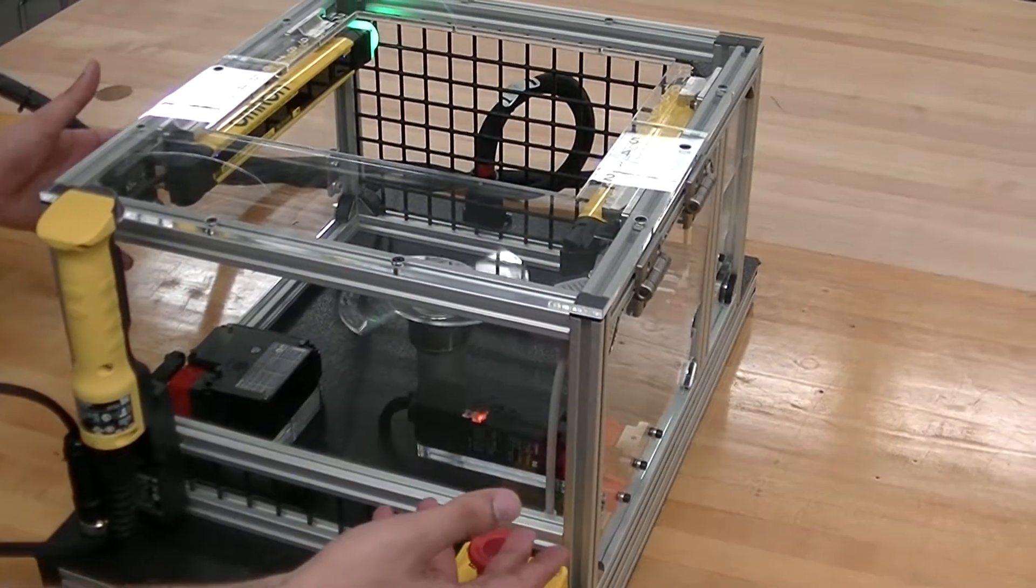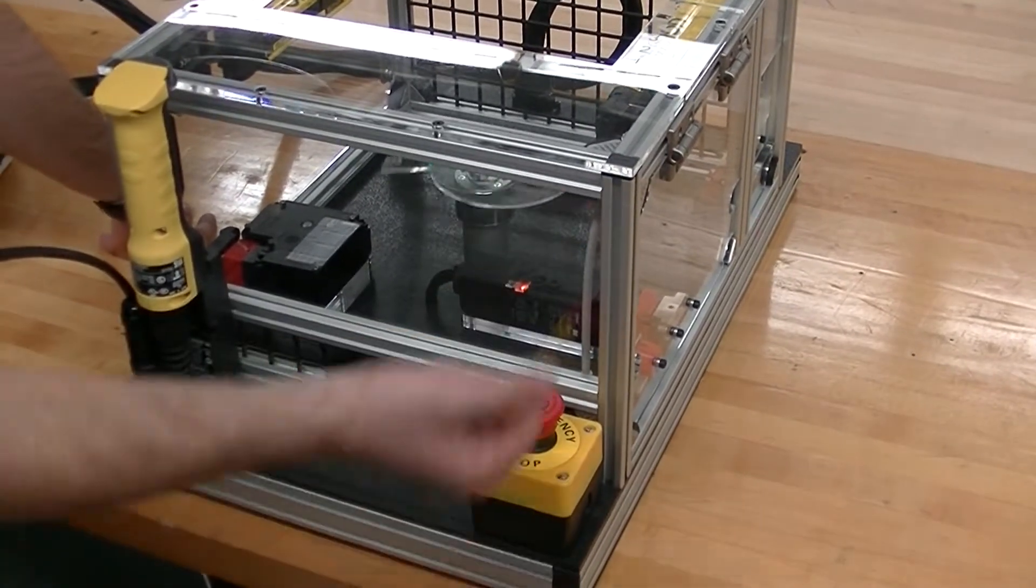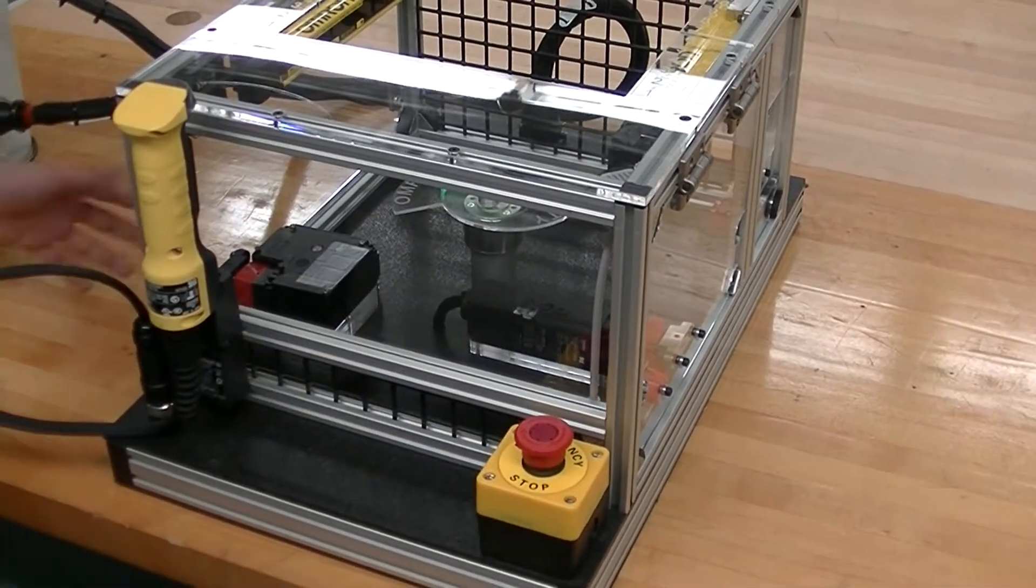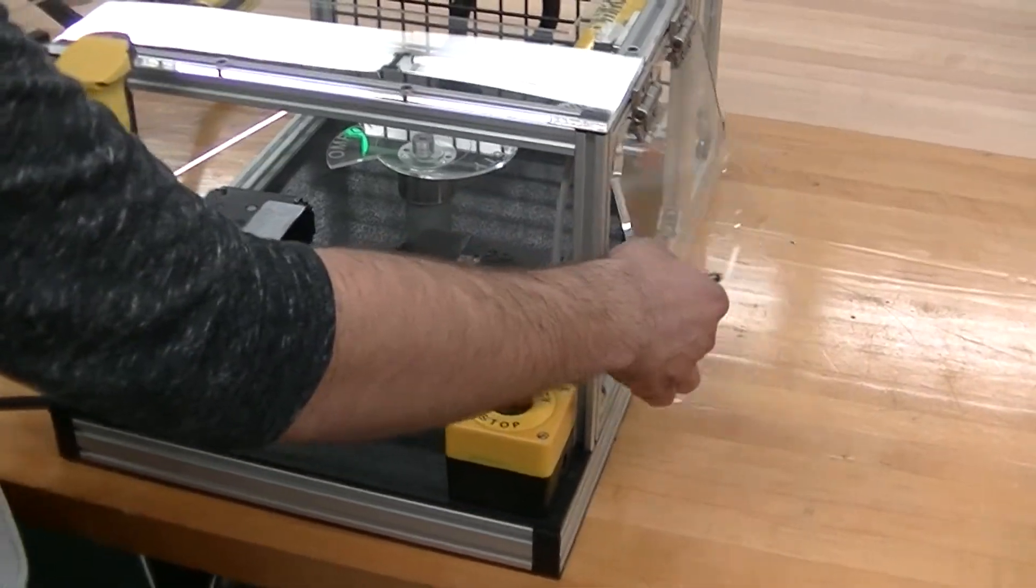We can stop the safety trainer under emergency conditions by hitting this e-stop. By hitting this, it faults the system right away and the doors become unlocked just in case you have to get inside the cell.